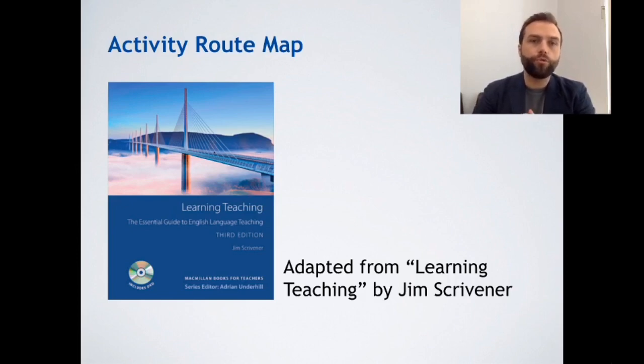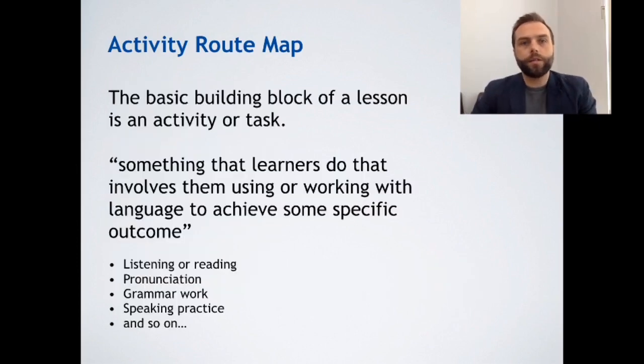In this video we're going to go through the steps of the Activity Route Map. Let's get started. Before we look at the steps, let's think about activities. The basic building block of a lesson is an activity or task. This is something that learners do that involves them using or working with language to achieve some specific outcome. There are different types of activities, for example, listening or reading, pronunciation, grammar work, speaking practice, and so on. An activity is the basic building block of a lesson.